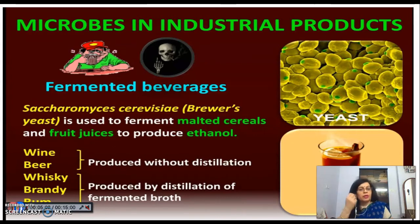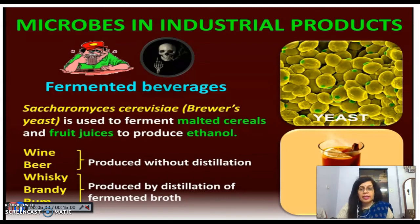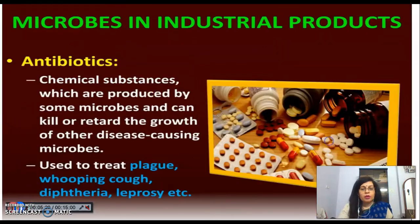Saccharomyces cerevisiae is used to ferment malted cereals and fruit juices to produce ethanol. You should know this name. Wine and beer are produced without distillation, while spirits like whisky and brandy are produced by distillation of the fermented broth.